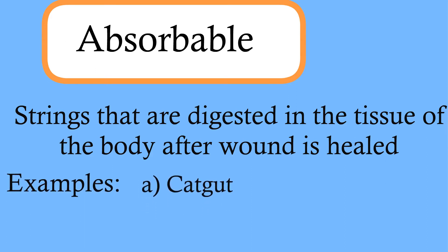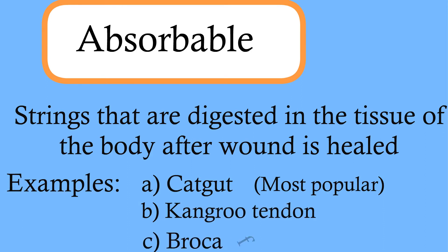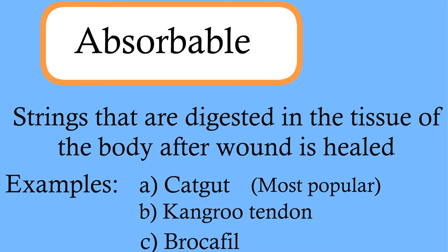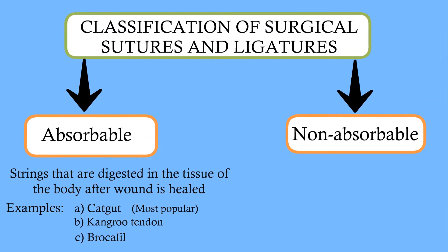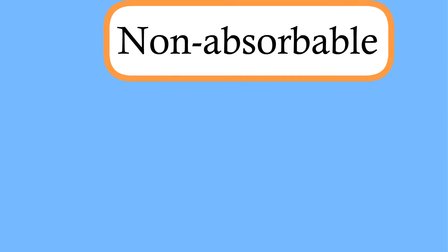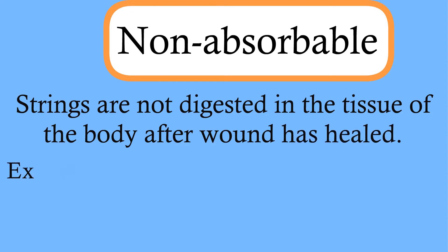Catgut is the most popular one. Other examples include kangaroo tendon and brocophil. Brocophil is extracted from horse. As the name suggests, non-absorbable sutures and ligatures are not digested in the tissue of the body after the wound has healed.